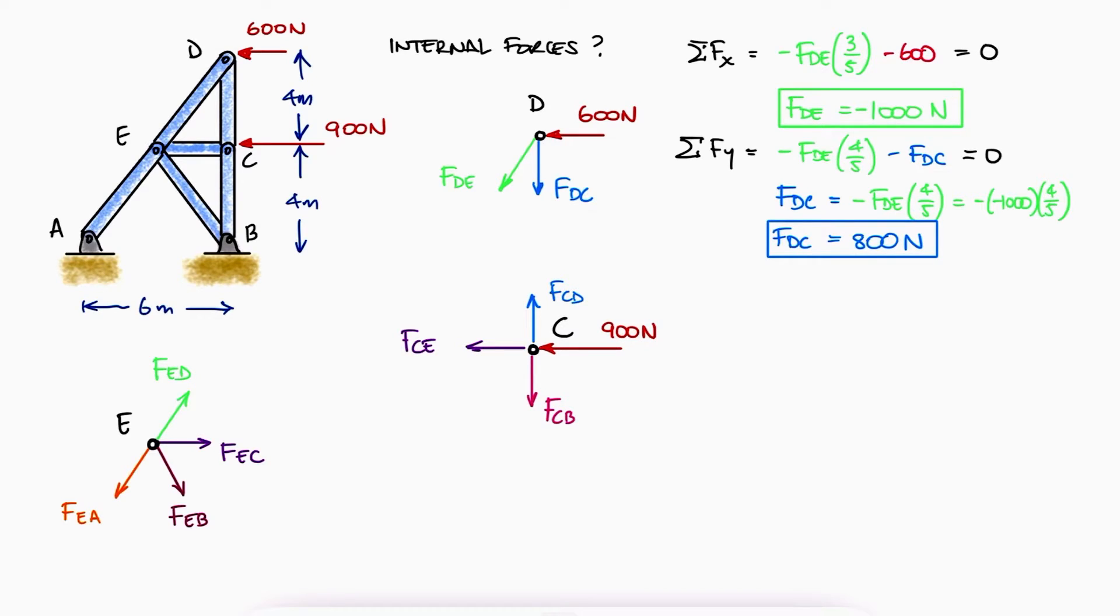we find three forces, of which one is known, which leaves us two unknown variables, which is perfect for the two equations that we find from the sum of forces, one in X and one in Y.